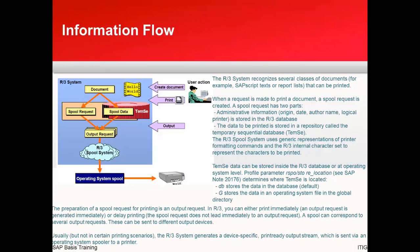The spool request has two parts. One is the admin part — that is the information about the origin, date, author name, and logical printer — which is stored in the R3 database. The second part is the data to be printed, which is stored in the repository called TEMC. The R3 spool system uses a generic representation of printer formatting commands and the R3 internal character set. This TEMC data can be stored inside the R3 database or at the OS level, and there is a parameter called RSPO/STORA_LOCATION which determines where the TEMC is located.